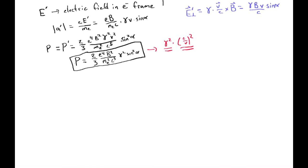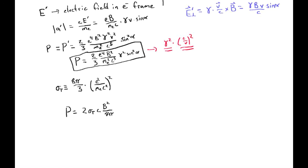We can write the synchrotron power in another form using the Thomson cross-section sigma_T = (8pi/3)(e^2/m_e c^2)^2. The synchrotron power becomes P = 2 sigma_T c (B^2/8pi) gamma^2 sine^2(alpha). Here B^2/8pi is just the energy density in the magnetic field, U_B. So the synchrotron power is P = 2 sigma_T c U_B gamma^2 sine^2(alpha).